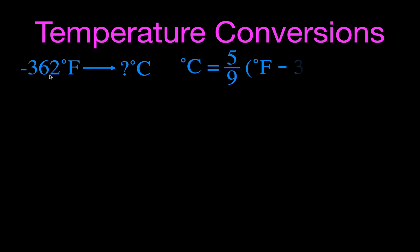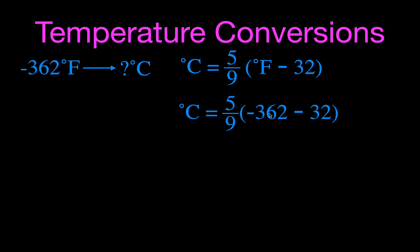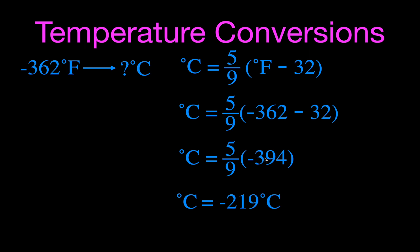This next example uses a negative Fahrenheit temperature — you can do the same conversions with negatives, just keep your signs in order. Using the equation and substituting -362°F: minus 362 minus 32 is minus 394, times 5 divided by 9 gives us minus 212°C. Make sure you follow the correct order of operations.